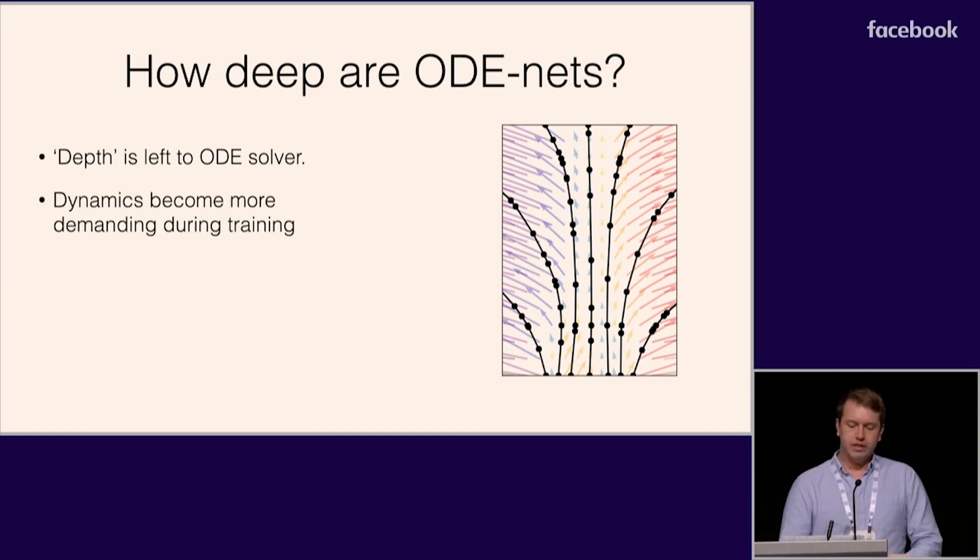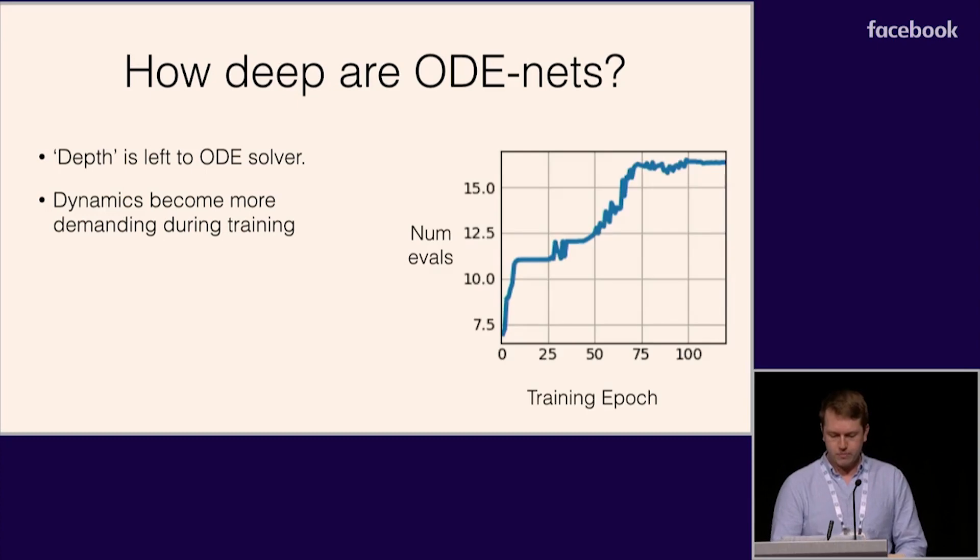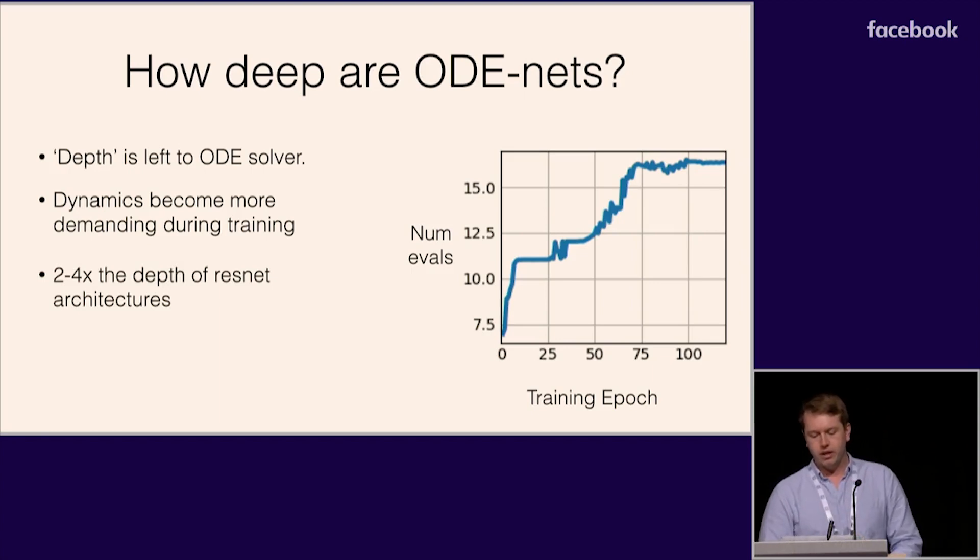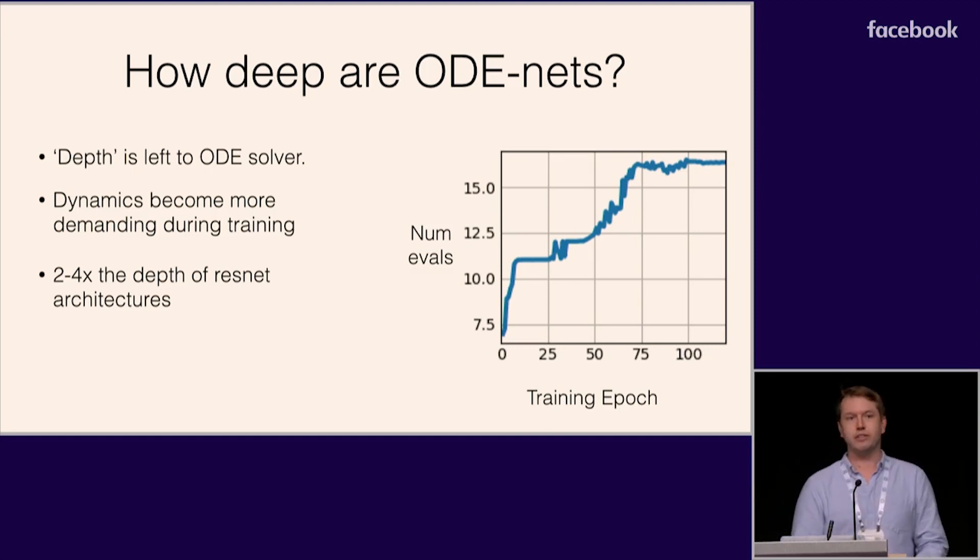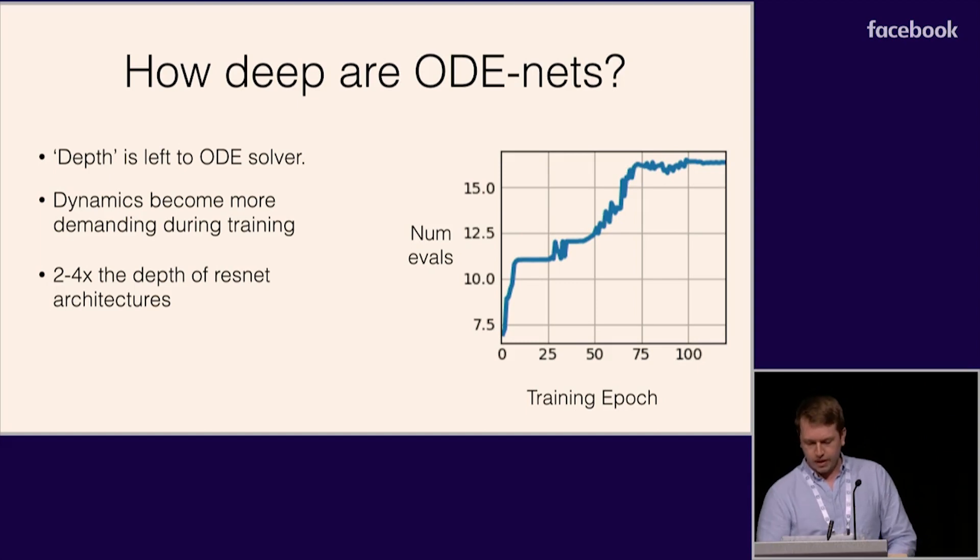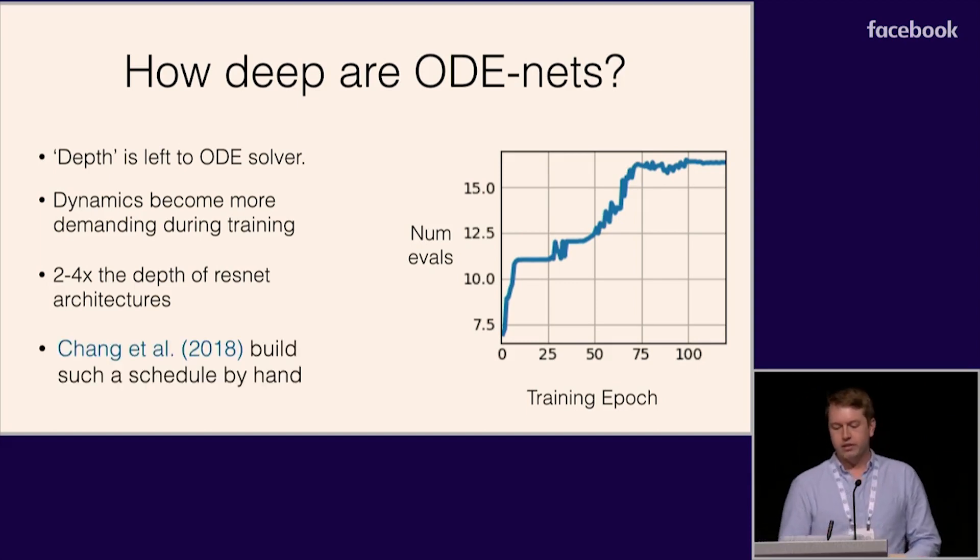We found that the dynamics actually became more demanding to compute during training. Here we show the average number of dynamics evaluations required by the ODE solver increases during training. So the downside of these models is that we can't directly control the time costs of the model during training, and the final models often end up being more expensive than the corresponding ResNet by about a factor of two to four times. Although the optimistic way to think about this is that the models are learning to be deep. Interestingly, recent work by Chang et al used the theoretical connection between ResNets and ODE solvers to suggest a scheme for gradually increasing the depth of ResNets during training, whereas here this happens automatically.